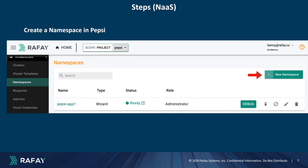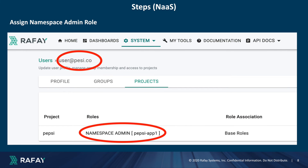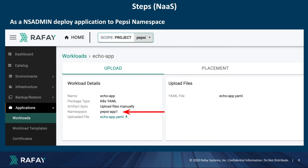Moving forward, let's create a namespace within the Pepsi project. Subsequently, we can assign a namespace admin role to our user specifically for the Pepsi project. This user will possess the capability to deploy resources exclusively within the confines of the Pepsi project. Notably, applications within this namespace are restricted from communicating with other namespaces, but they can accept incoming traffic through Ingress on ports 443 and 80.